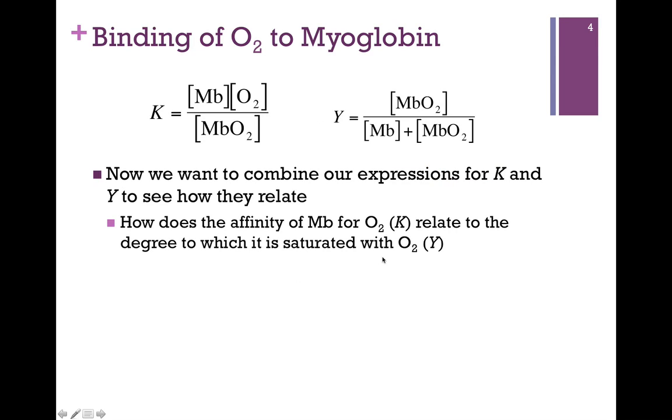Now we want to combine these two expressions so that we can see the relationship between the equilibrium constant and the fractional saturation. In other words, how does the affinity of myoglobin for oxygen, that's our equilibrium constant, relate to the degree to which it is saturated with oxygen, our fractional saturation, Y?